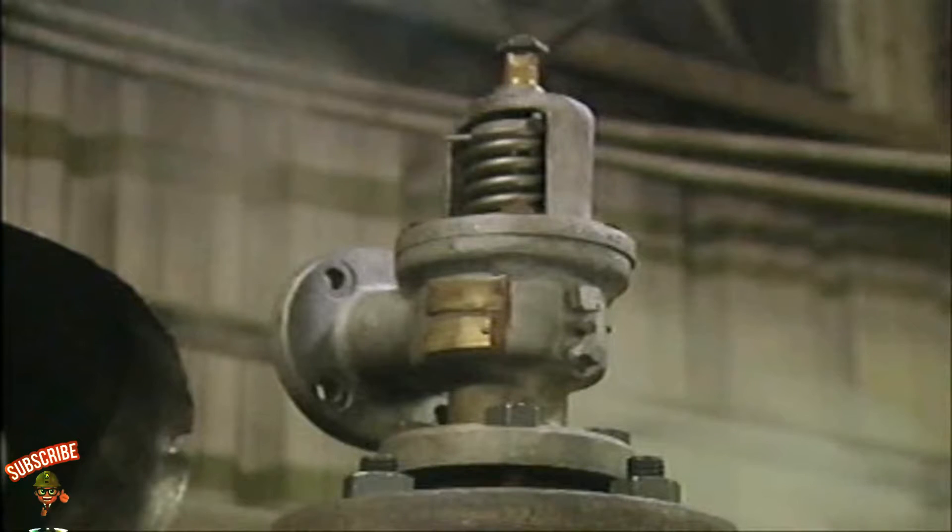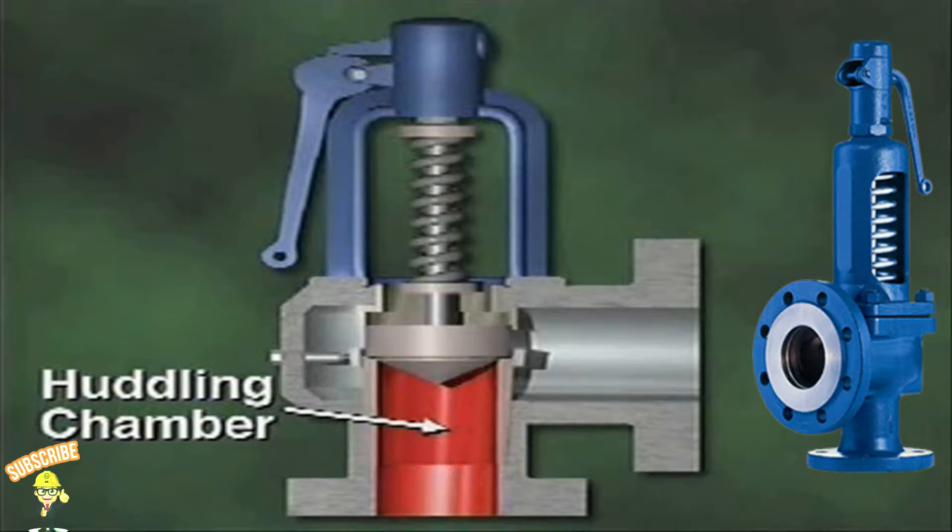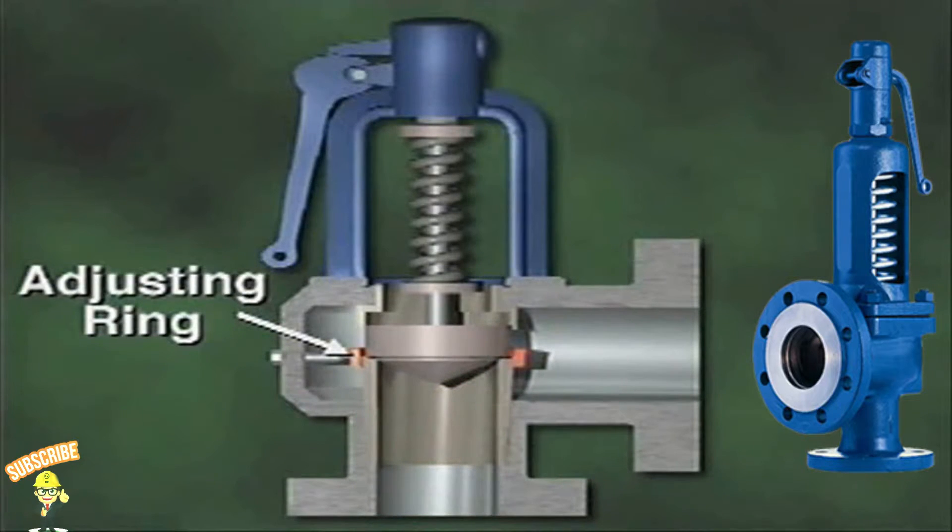In this part, we'll look at a huddling chamber safety valve. This type of safety valve is named for a small space called a huddling chamber that's located just below the valve's disc. The valve has an adjusting ring that's used to direct escaping steam either toward or away from the disc.